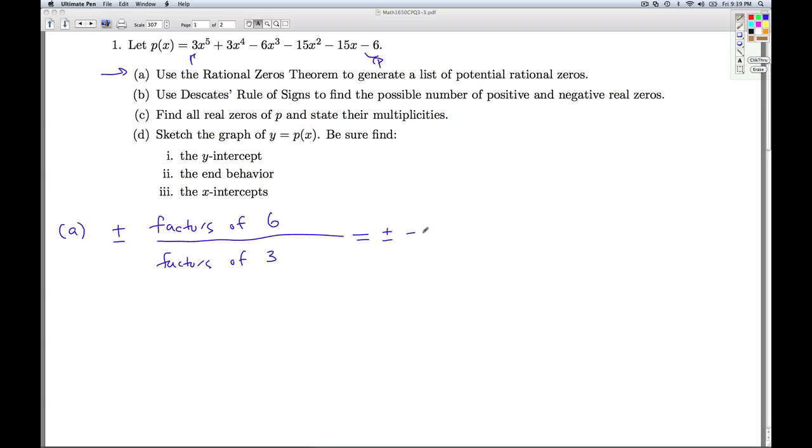So this is plus or minus, and what are the factors of 6? 1, 2, 3, and 6, and the factors of 3 are 1 and 3. So let's go through and generate this list, plus or minus. 1 over 1 is 1, 2 over 1 is 2, 3 over 1 is 3, 6 over 1 is 6.